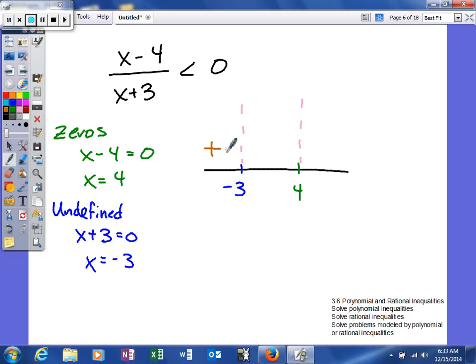In between those two I can plug in zero. If I plug in zero it's going to give me negative four divided by a positive three. Anytime you divide a positive and a negative, you'll get a negative. So what I'm going to assume is anything in between those is going to give me a negative.